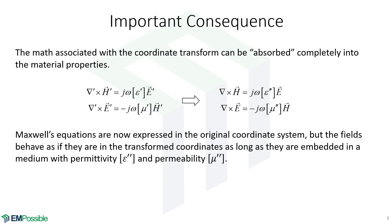Our fields and waves would look as they did in the original coordinate system, as long as they're embedded in this new mu and epsilon. So if in this strange system, the waves were bending and twisting in some way that we wanted them to...